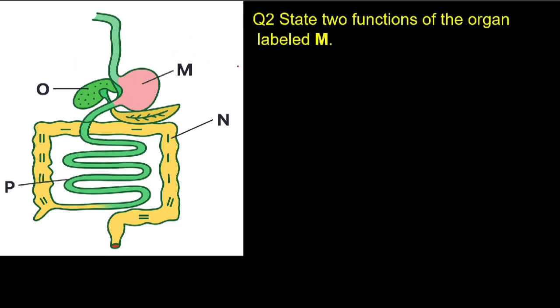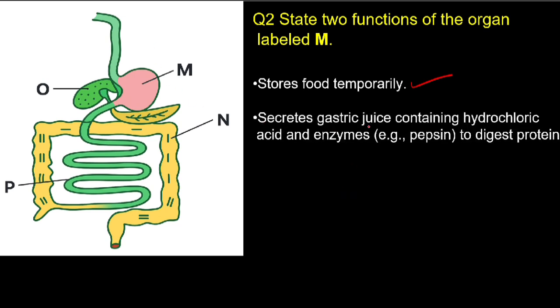Question number two: state two functions of the organ labeled M — the stomach. Number one, it stores food temporarily. Number two, it secretes gastric juice containing hydrochloric acid and enzymes such as pepsin, which digest proteins.